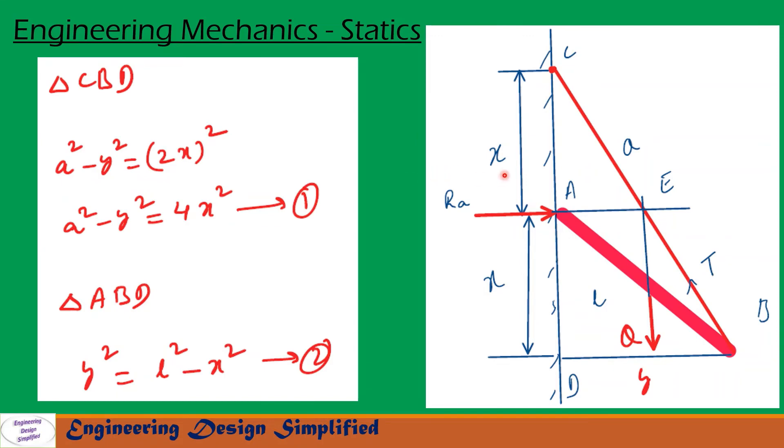Now let us see triangle CBD. This side is A from C to B and this side from C to D is X plus X, that is 2X, and let us call this distance from D to B is Y. From this right angle triangle CBD, we can write A square minus Y square equal to 2X whole square. So from this we can write A square minus Y square equal to 4X square. Let us call that equation 1.